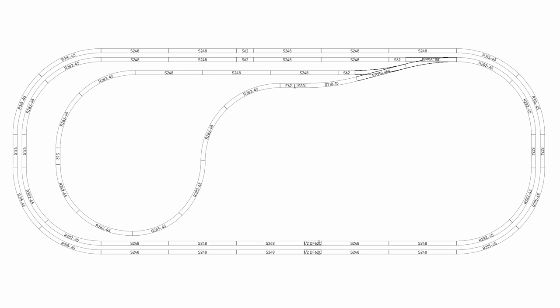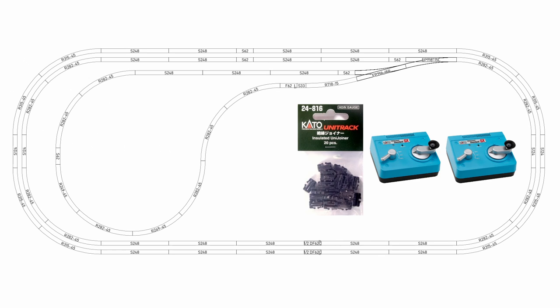I've got a simple double loop with two turnouts and that inside loop around the inside. To do this I'm going to need two power supplies, some insulated couplers, and the key thing is what they call an extension cord, a 24827.